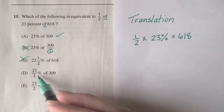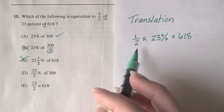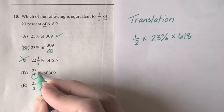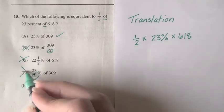For D, we have the same problem as B. We got 309 from one-half times 618, but there's a second one-half factor appearing. That's out.